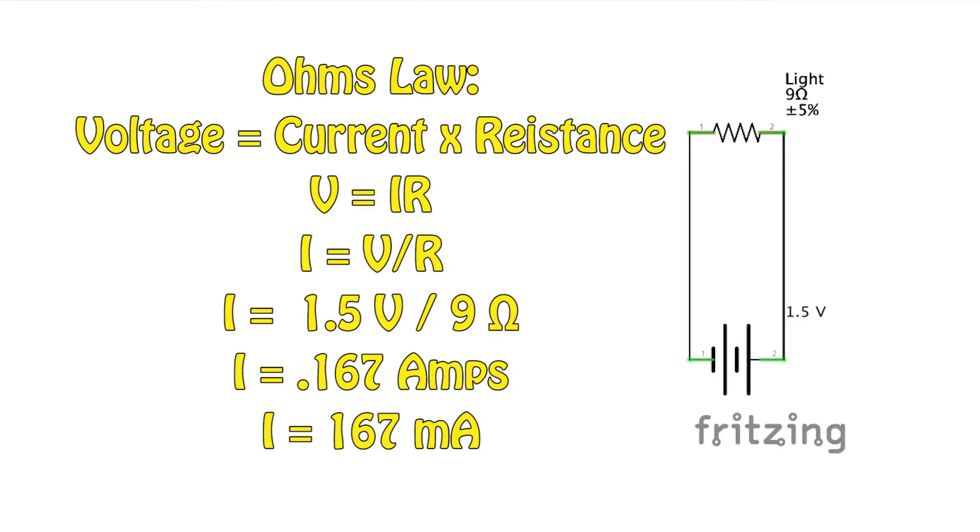If this battery is about 1.5 volts, then the light has a resistance of 9 ohms. And the current flowing through this circuit is about 0.167 amps or 167 milliamps.